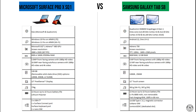For the display, the Surface Pro X SQ1 has a 13-inch screen versus an 11-inch touchscreen for the Samsung Galaxy Tab S8. For the batteries, the battery life is similar between the two, both using lithium polymer non-removable batteries, with a fast charging option available on the Samsung Galaxy Tab S8.